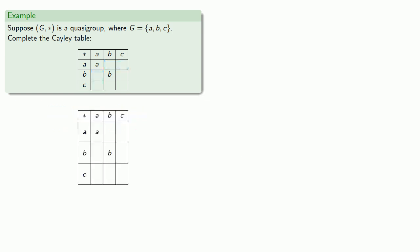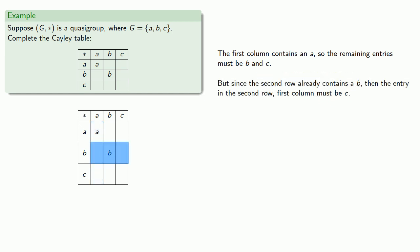So let's reason our way through this. The first column already contains an A, so the remaining entries must be B and C. But since the second row already contains a B, then the entry in the second row, first column, must be C, and that means the last entry must be B.